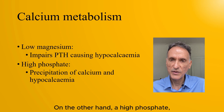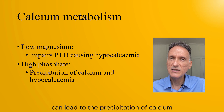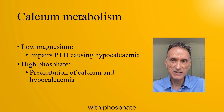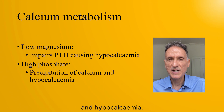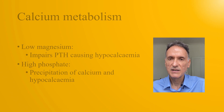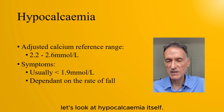On the other hand, a high phosphate, like seen in CKD, can lead to the precipitation of calcium with phosphate, and the consequent reduction in serum calcium and hypocalcemia. Now that we have done this review, let's look at hypercalcemia itself.